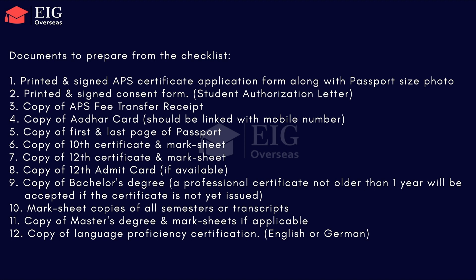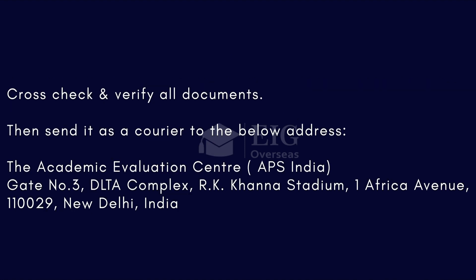Ninth, copy of bachelor's degree certificate. In case the degree certificate is not yet issued, a provisional certificate will be accepted, and it should not be older than one year. Tenth, copy of mark sheets of all semesters or transcripts. Eleventh, copy of master's degree certificate and transcripts if available. Twelfth, copy of language certificate if it is in English or German. Please do cross-checking before you send the courier.